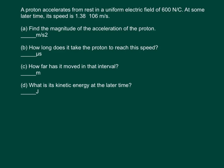The question says a proton accelerates from rest in a uniform electric field of 600 newtons per coulomb. At some later time its speed is 1.38 times 10 to the sixth meters per second.